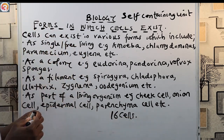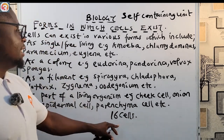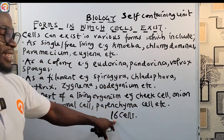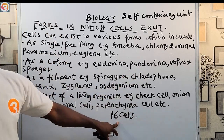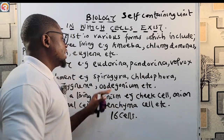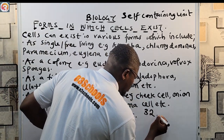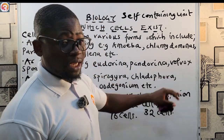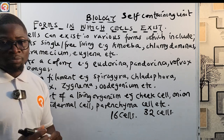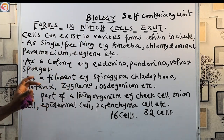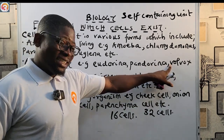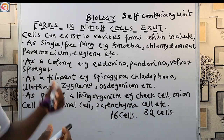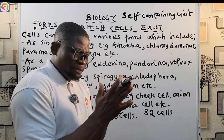Pandorina exists as a colony of 16 cells. Eudorina exists as a colony of 32 cells. Volvox exists as a colony of hundreds and thousands of cells.